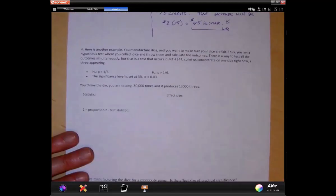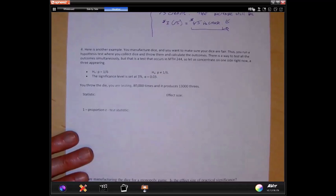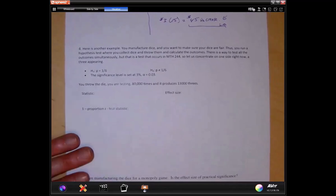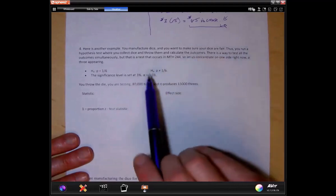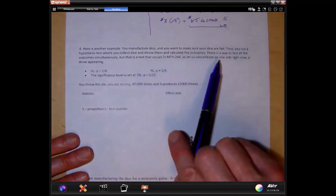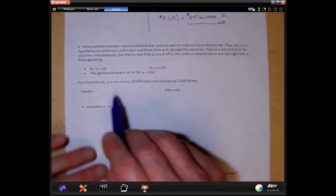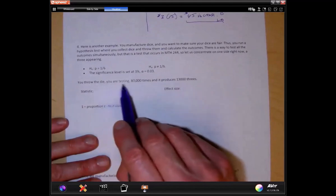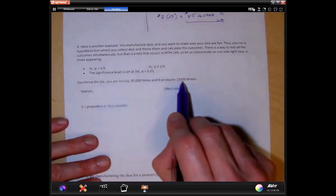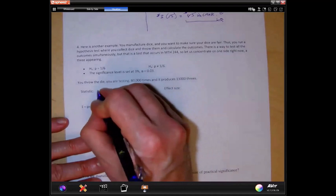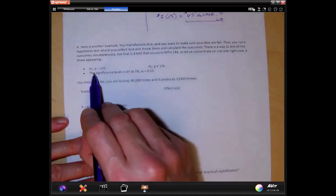One more example. You manufacture dice. You want to make sure your dice are fair. If you want to do this, please stop the video. I'm going to just go through this myself. So I'm going to run this test. You told me that your die, you're testing it 8,000 times and the proportion is 13,000 degrees.